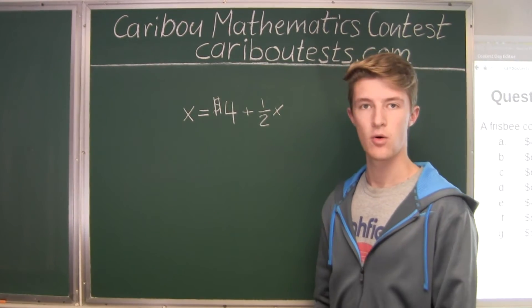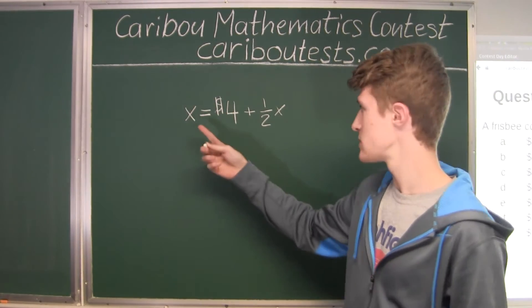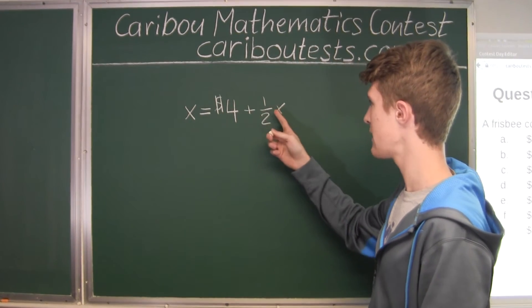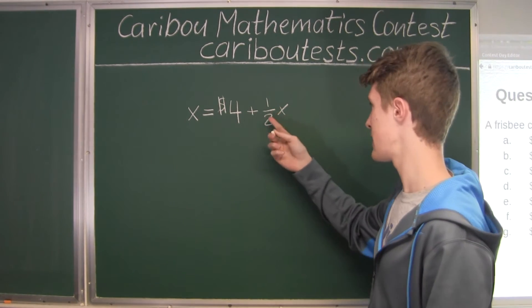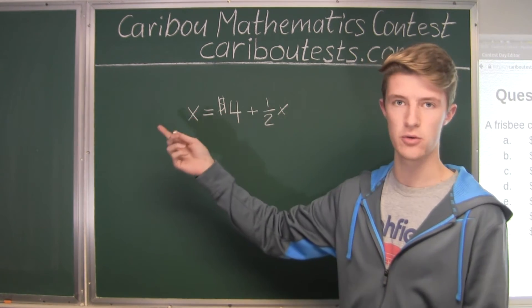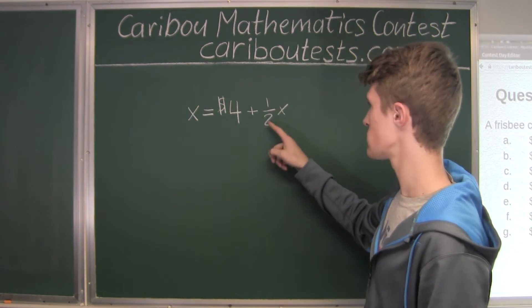Okay. Well, we only want x on one side. So since we have a full x here and only a half x here, we will subtract half x on both sides. So this half x would cancel out,